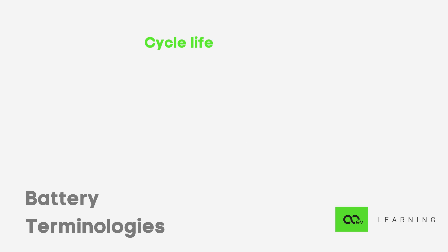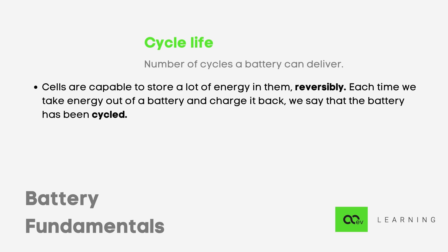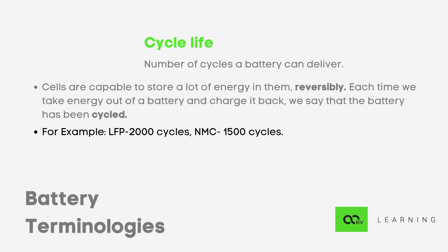Second is cycle life, which corresponds to the number of charge and discharge cycles the cell can perform. Since cells are capable of storing energy reversibly, each time we discharge and charge them back, we say one cycle has been performed. LFP (lithium iron phosphate) has more than 2000 cycles, while NMC has almost 1500 cycles.